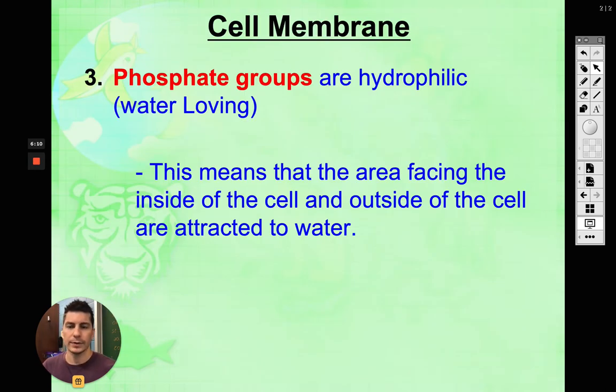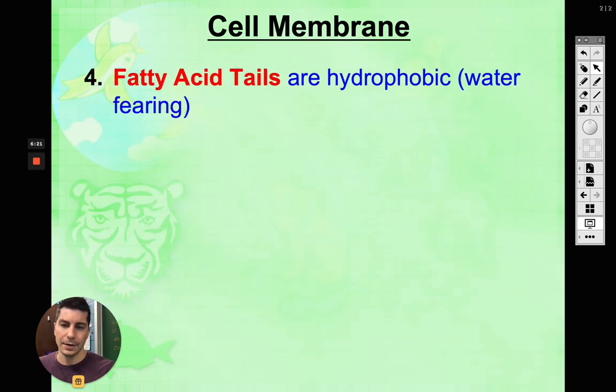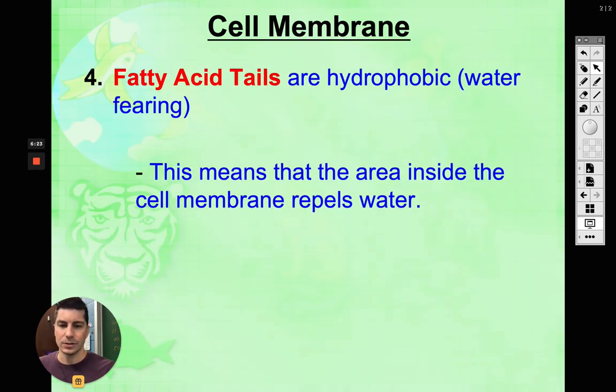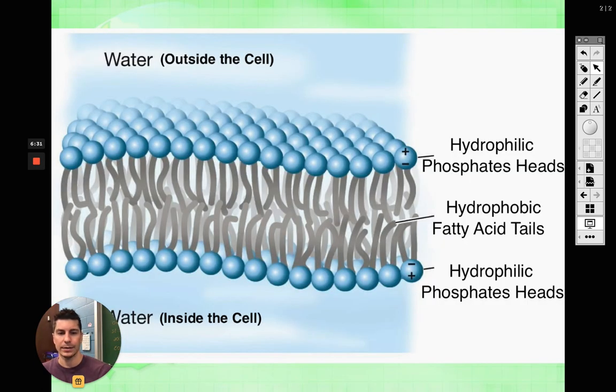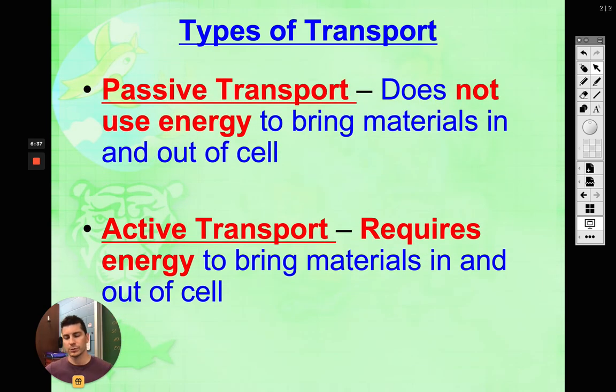We already talked about this guys - phosphate groups are hydrophilic, they like water. So the area facing outside and inside the cell, they like water. The area inside of our cell membrane, in the middle of it, that area is hydrophobic. It repels water, it doesn't like when water is near it. So that's that area in the middle. This is why water cannot easily pass through the cell membrane.